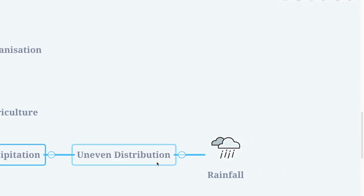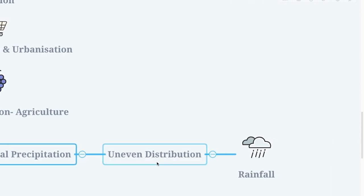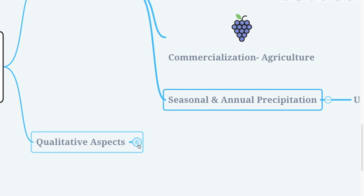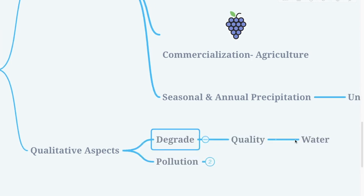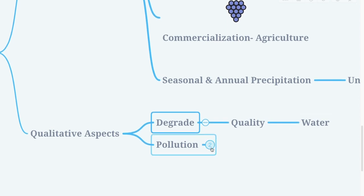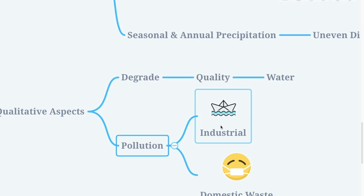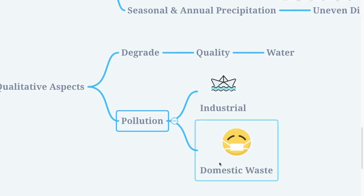In some parts like northeast India there is a lot of rain, while in other parts such as Rajasthan there is very little rain. Moving on to qualitative aspects — what decreases or degrades the quality of water? The most important point here is pollution. Industries create pollution, and there is also pollution from domestic waste.